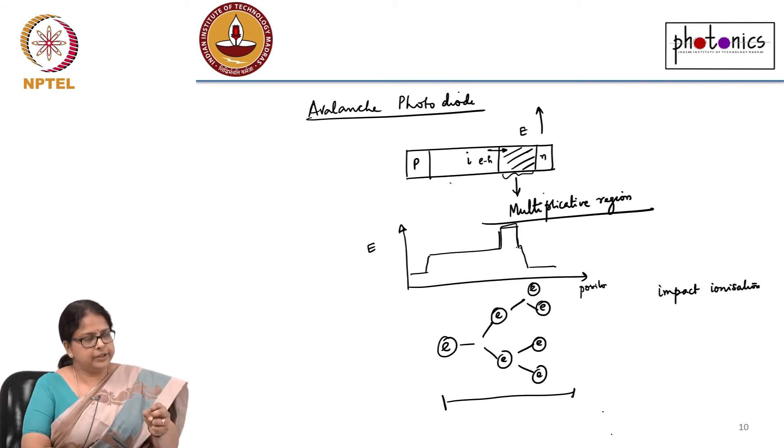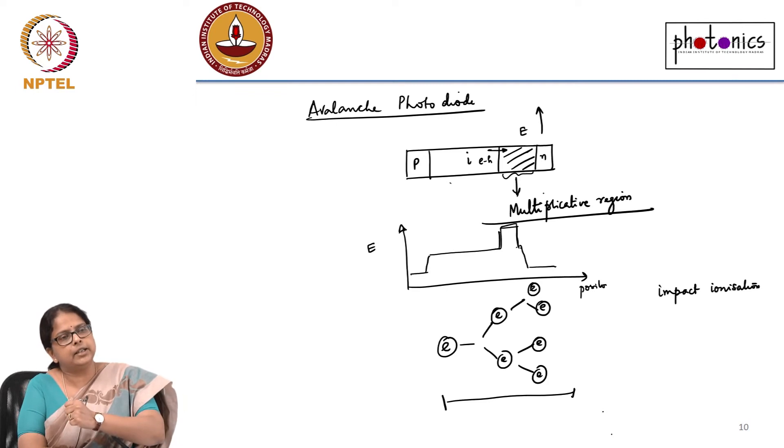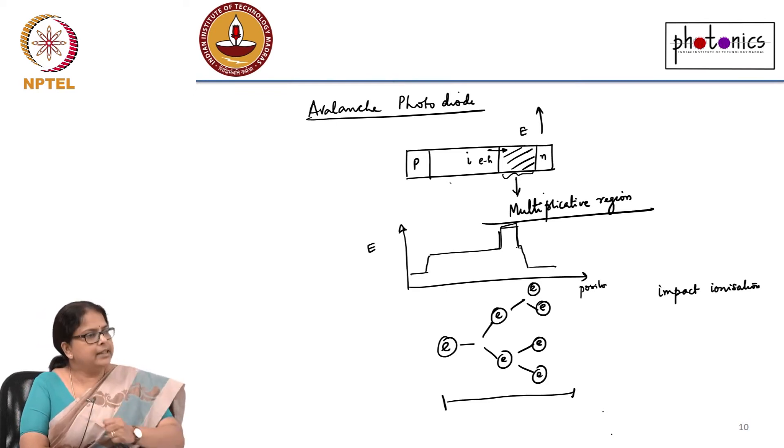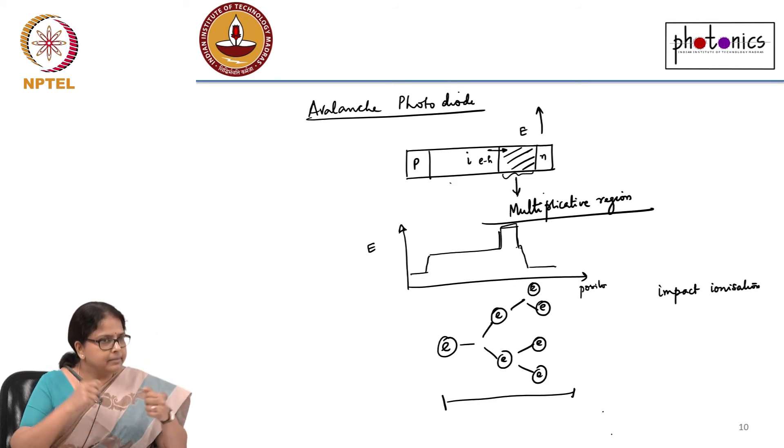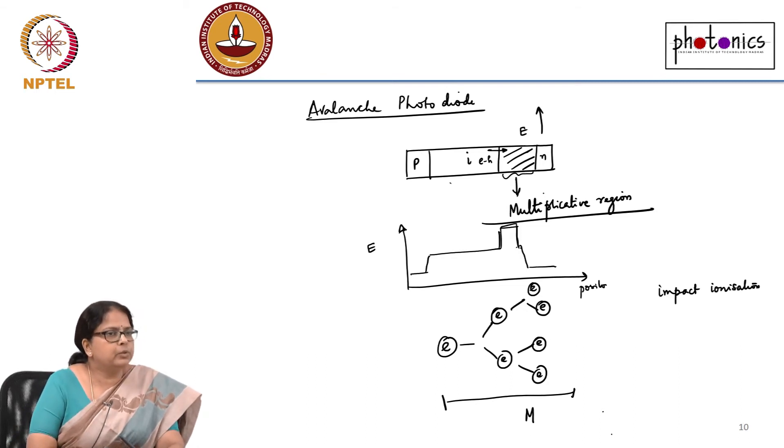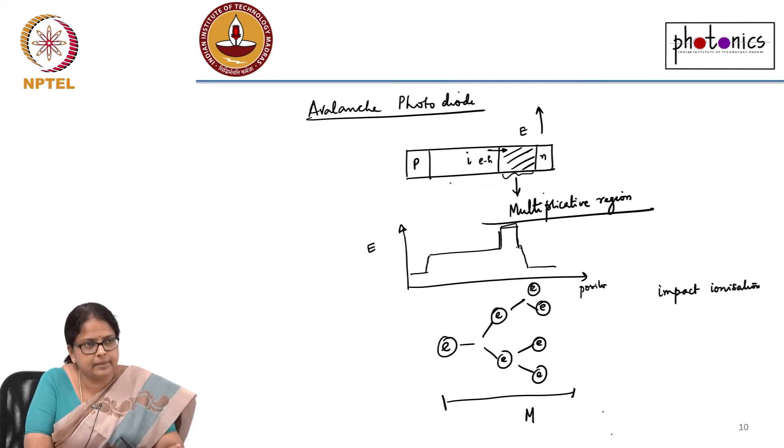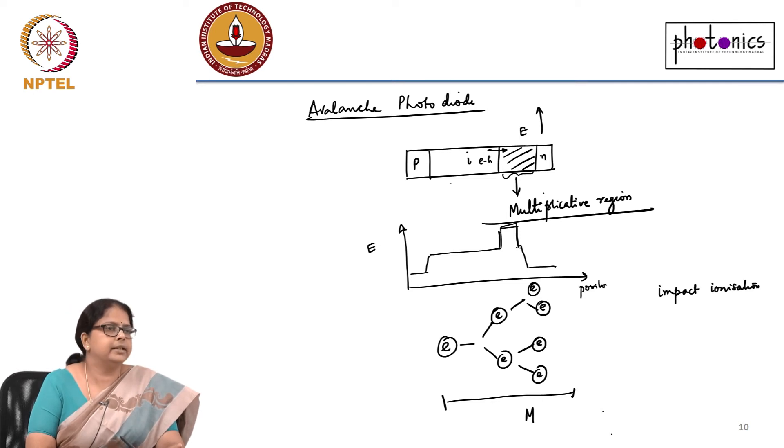One photon generated an electron hole pair. The generated electron moved through this very high electric field region and because it is experiencing a large electric field it gained a lot of energy and then generated impact ionization, goes and kicks off more electron hole pairs by ionization by impact. And that gives rise to a multiplicative factor M and that is what you do in the construction of avalanche photodiode. It is creating an avalanche effect. A highly energetic electron photon generating more number of electron hole pairs. One photon has generated M electrons now.